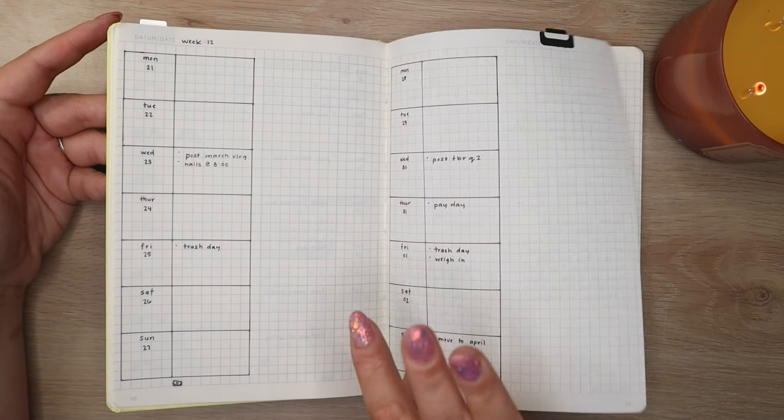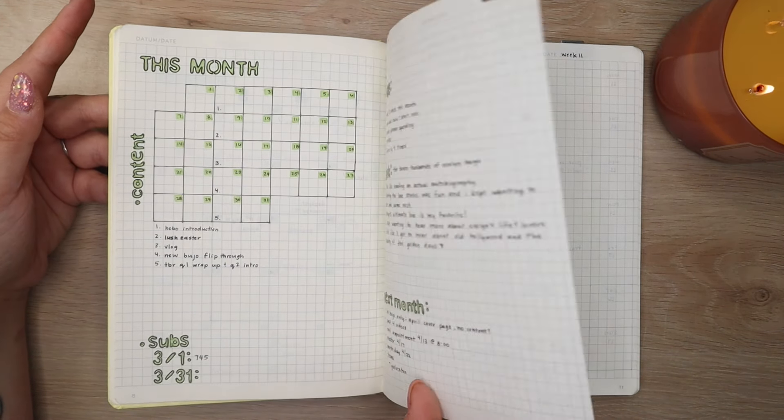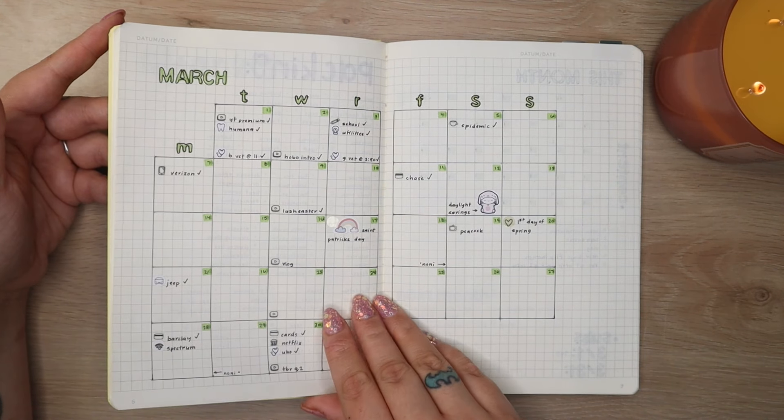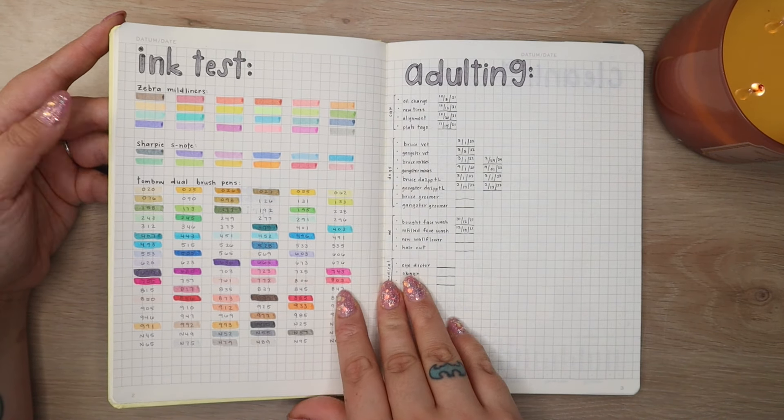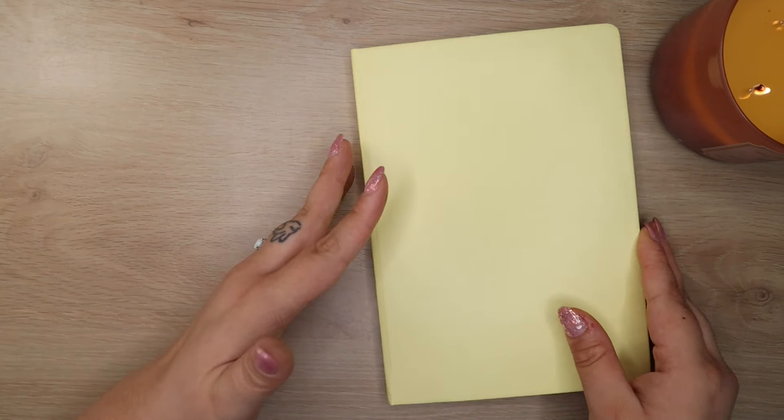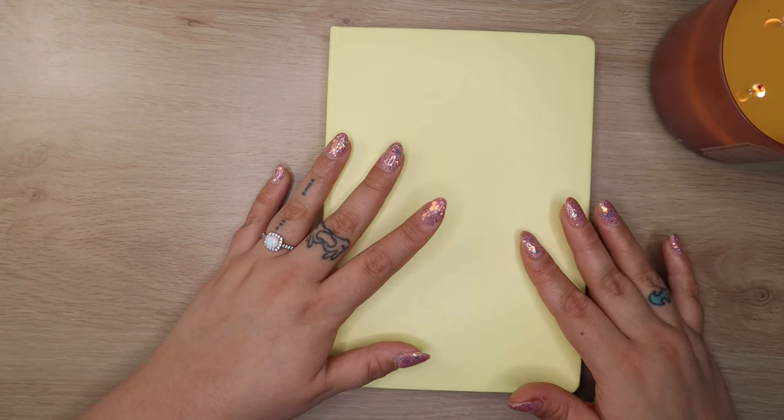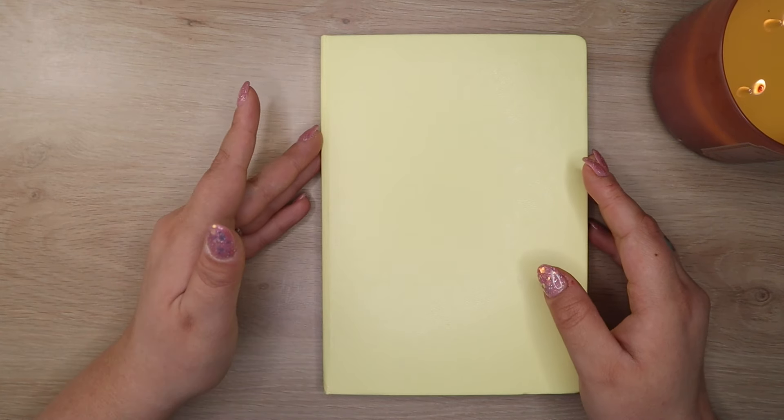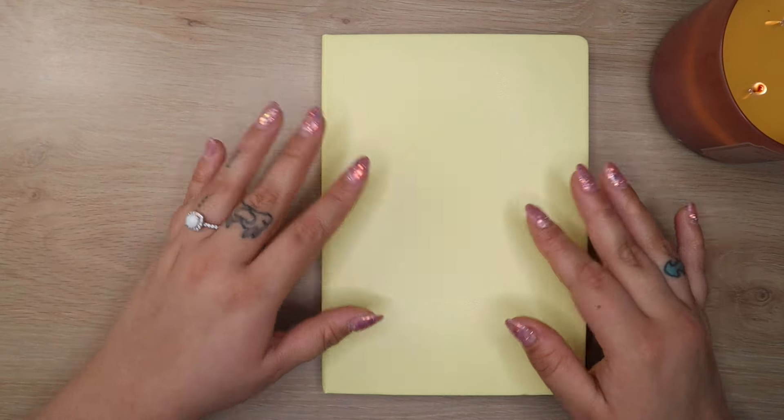Anyways, that is my current bullet journal setup. I hope that you guys don't feel like I'm throwing you guys around all over the place with my notebooks and what I keep deciding to use and then not use and blah, blah, blah. But yeah, that's what I'm currently doing. So we will see how long this lasts, but anyways, I hope you guys enjoyed this video. If you did, please make sure to give it a thumbs up and also subscribe to my channel below. Ring the little bell icon if you want to be notified every time I post, which is on Wednesdays. And yeah, I love you guys so much and I'll see you in the next one. Bye.